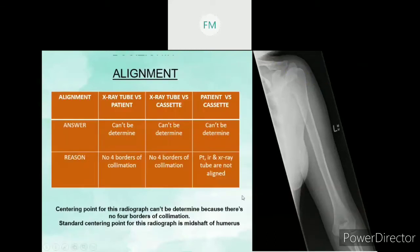For alignment: X-ray tube versus patient cannot be determined because there is no fore-border of collimation. X-ray tube versus cassette also cannot be determined because there is no fore-border of collimation. And patient versus cassette cannot be determined because the alignment between patient, IR, and tube are not aligned to each other — they are in a diagonal position. The centering point for this radiograph cannot be determined because there is no fore-border of collimation. But the standard centering point for this radiograph is the mid-shaft of humerus.